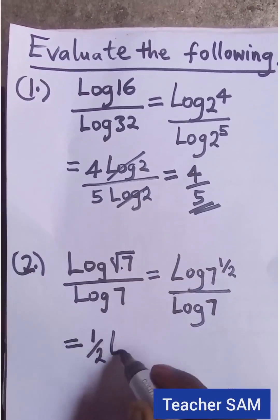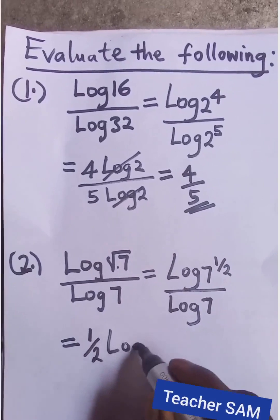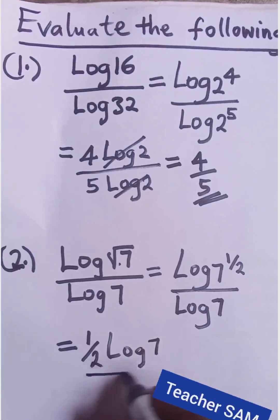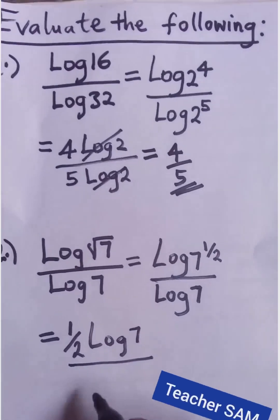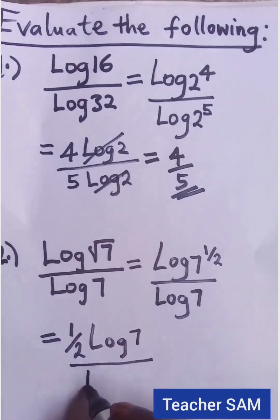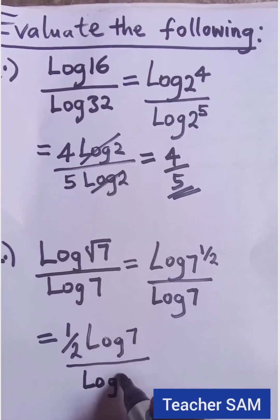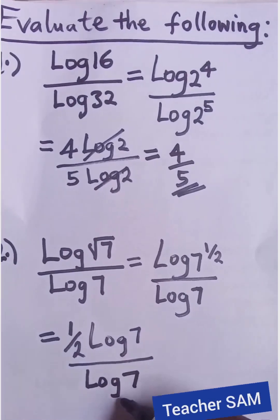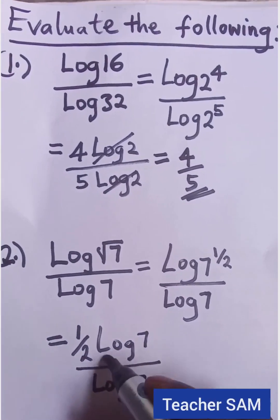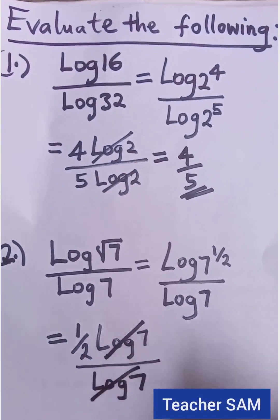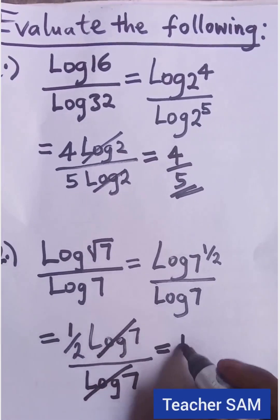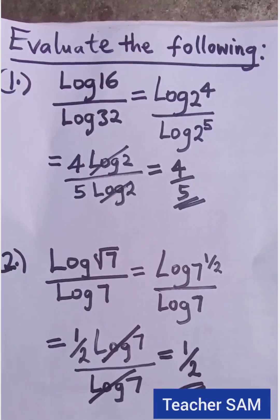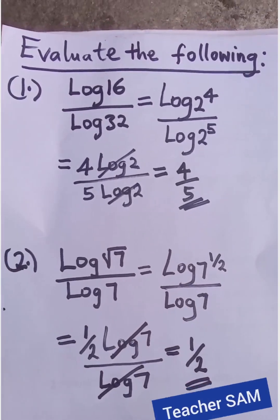We bring the one half out as a multiplier, giving us one half times log 7, divided by log 7. The log 7 to base 10 terms are common, so we can cancel them out, and our answer is one half. It's as simple as that.